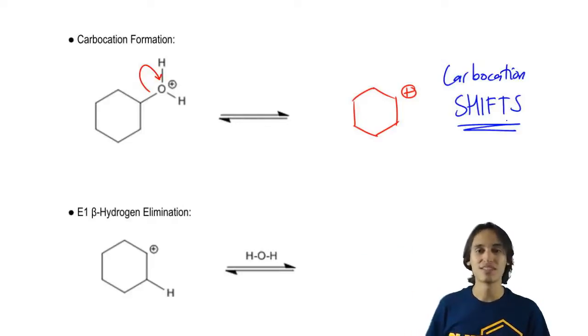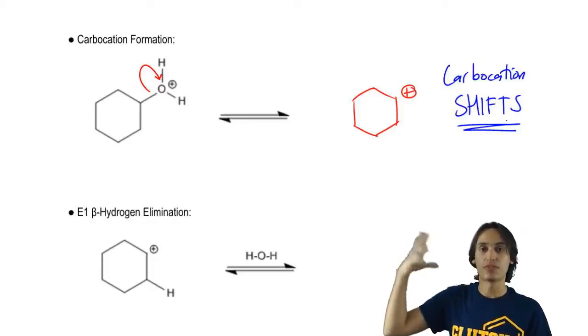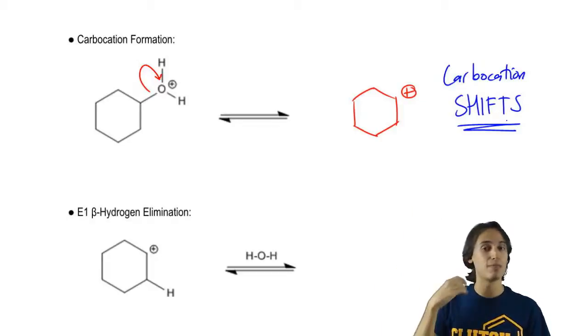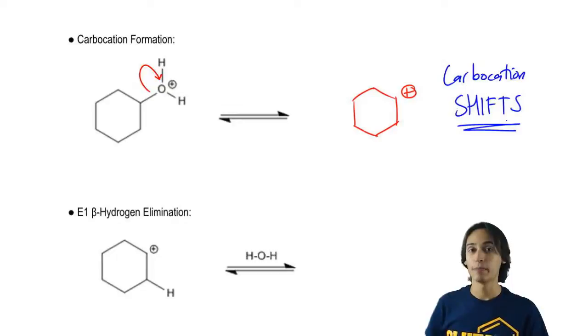No. Because it's secondary, it doesn't matter. But there's nowhere else that it can shift that it would become more stable. But if I had a methyl group around or something like that, this would be able to shift and become more stable carbocation.